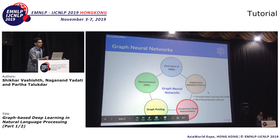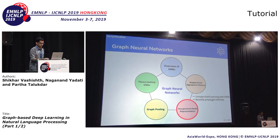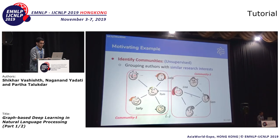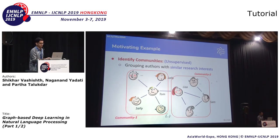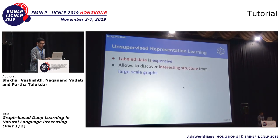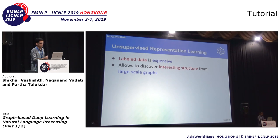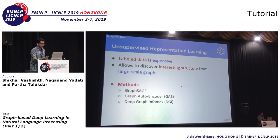Now I'll talk about methods which allow us to learn embeddings in an unsupervised manner using graph convolutional networks. The motivating example is detecting communities in a co-authorship graph in an unsupervised manner. Label data is expensive, and there are various large graphs for which we have no label information, making these approaches highly relevant. One can get representations that can then be used for several downstream tasks.